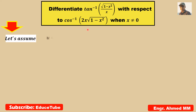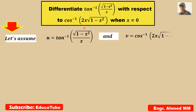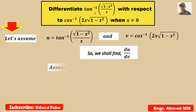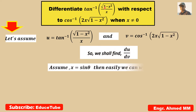Hi everybody. Here I am going to show you how to differentiate tan inverse of square root of 1 minus x squared by x, with respect to cos inverse of 2x times square root of 1 minus x squared.